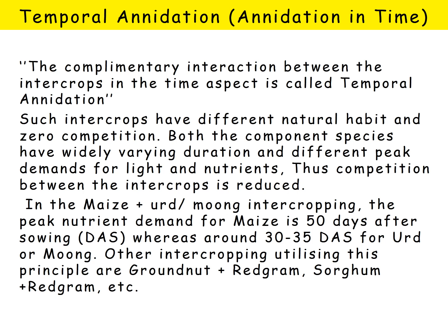For example, in maize plus cowpea or mung intercropping, the peak nutrient demand for maize is at 50 days after sowing, whereas it is around 30 to 35 days after sowing for cowpea or mung. Other intercropping combinations utilizing this principle are groundnut plus red gram and sorghum plus red gram. This is temporal anidation.